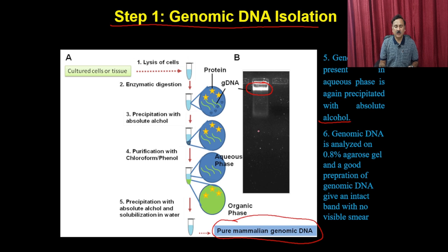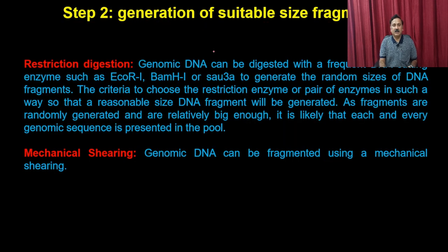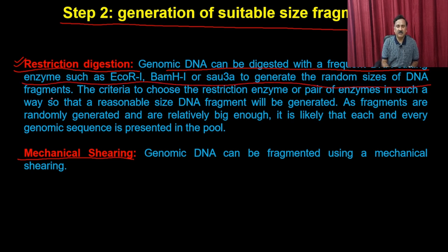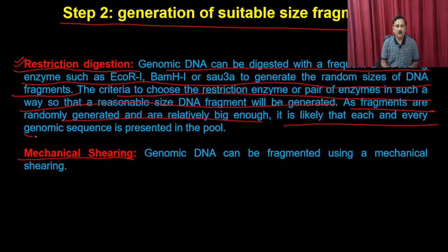Step 2 is generation of suitable-size fragments, done by two methods: restriction digestion or mechanical shearing. The genomic DNA can be digested with frequent DNA-cutting enzymes such as EcoRI, BamHI, or Sau3A to generate random-sized DNA fragments. The fragmentation enzyme is chosen to give a reasonable fragment size so that each genomic sequence is likely represented in the pool. Alternatively, genomic DNA can be fragmented by mechanical shearing.